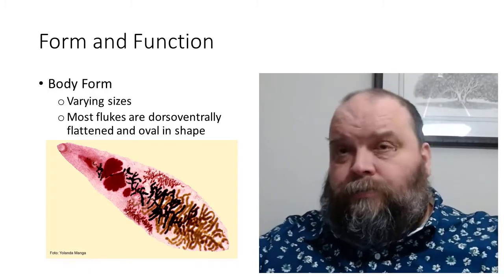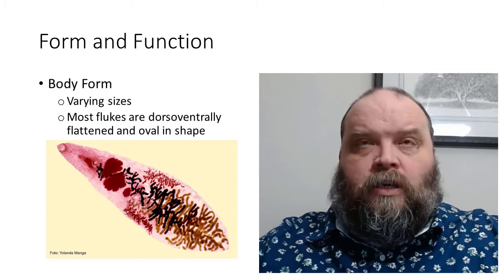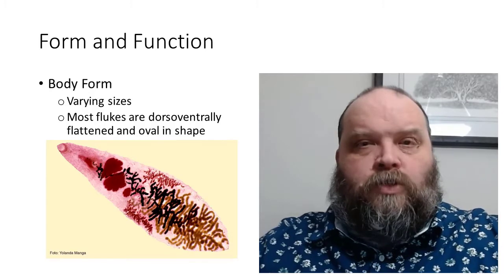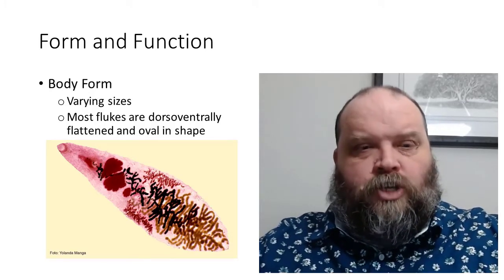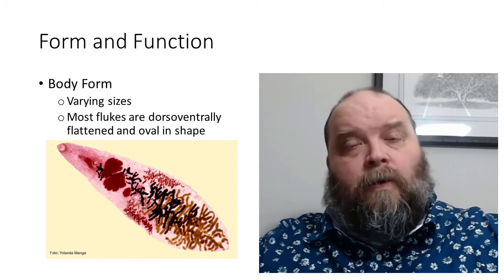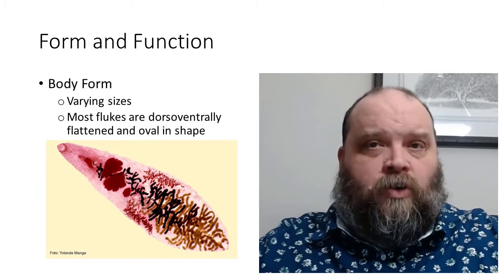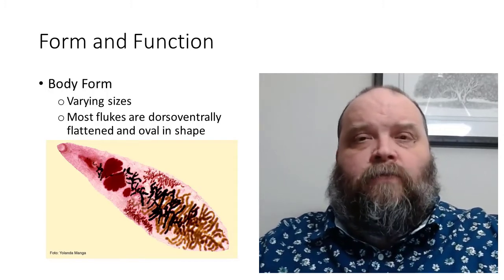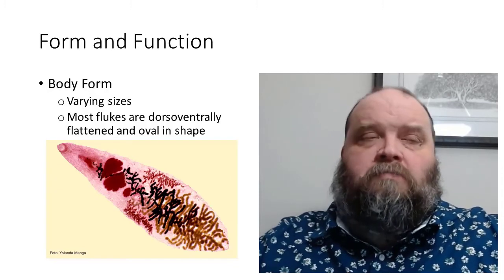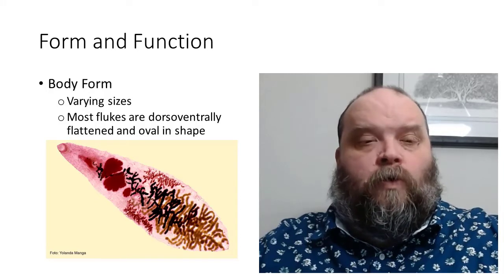As you see here, this Fluke has a generalized shape. It's an elliptical, almost oval, shape to it. There will be an anterior and a posterior end. Anterior end, generally, you're going to find some form of an oral opening. The posterior end is where you're going to find many of the reproductive organs.